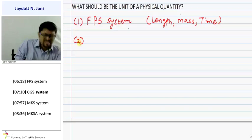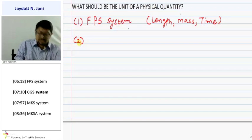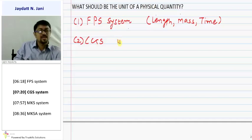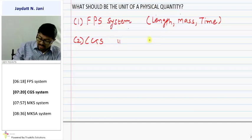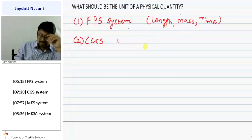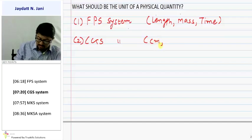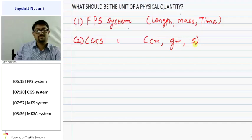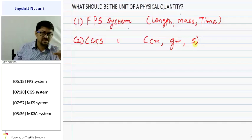The second system is a little bit of an upgraded version — it is the CGS system. CGS stands for Centimeter, Gram, and Second. So in the CGS system: C means centimeter (unit of length), G means gram (unit of mass), and S means second (unit of time). As mentioned, FPS is foot, pound, second, while CGS is centimeter, gram, and second.